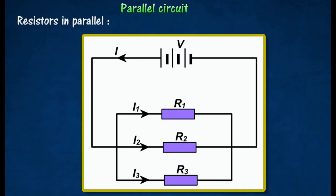In the parallel circuit shown in the diagram, the three resistors R1, R2 and R3 are connected in parallel.